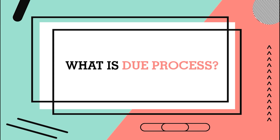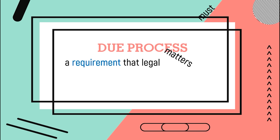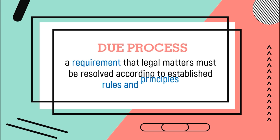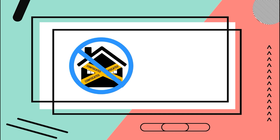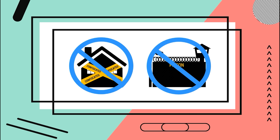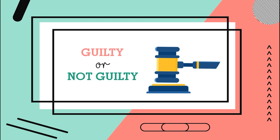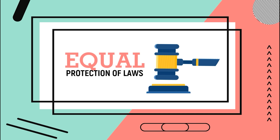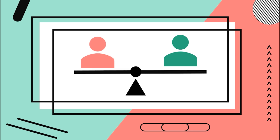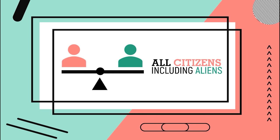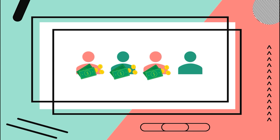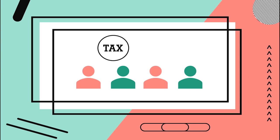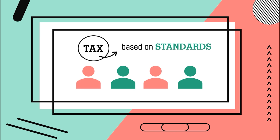So what is due process? Due process is the requirement that legal matters must be resolved according to established rules and principles. For example, under due process, individuals cannot have their property seized or be put in jail without first going through the legal system to determine if they are guilty of the crime. Also included in this section is the equal protection of laws, which means that the government must treat similarly situated individuals in the same manner. This protection covers all citizens, including aliens. For example, everyone earning an income is taxed, and tax rates are based on the same standards for persons that are similarly situated.